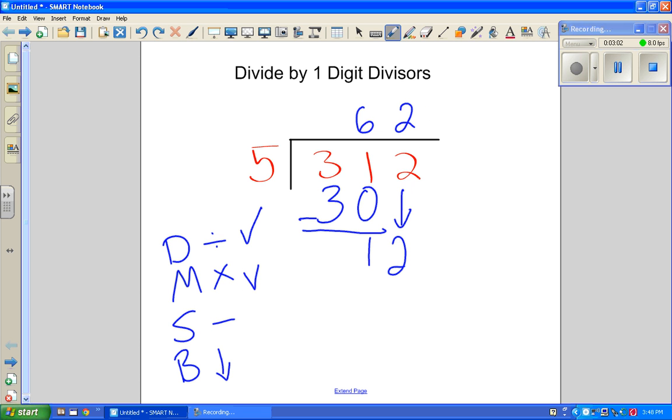Then we multiply. 5 times 2 is 10. That brings us to subtract. 12 minus 10. We have 2 left over. And the last part, we bring down. Now there's nothing to bring down. So we're left with this 2 with nowhere to go. That becomes our remainder. There's nothing else to do. Our answer is 62, remainder 2.